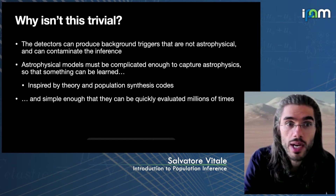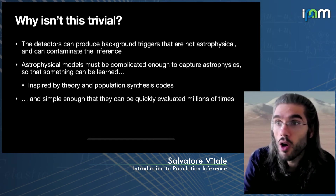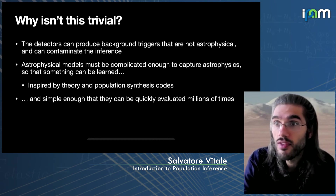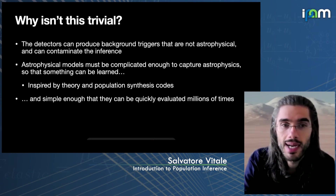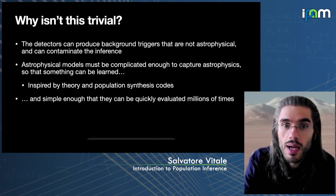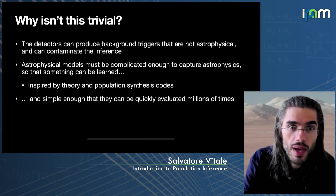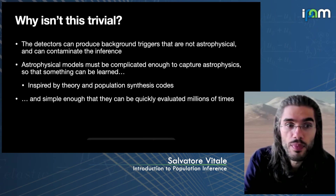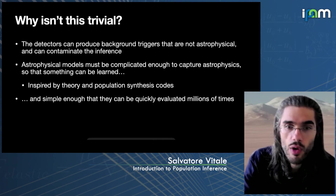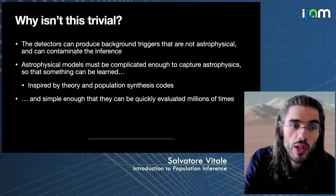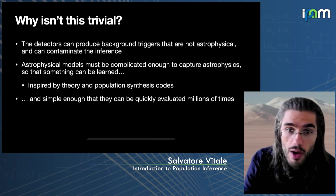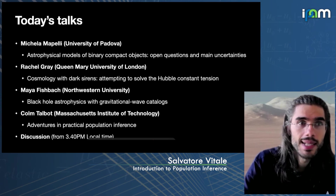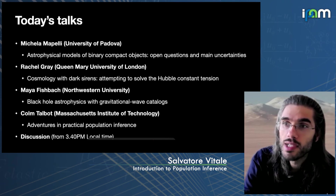Our detectors are also good at producing triggers which are not astrophysical in origin — what we call glitches — and those can contaminate the inference if not properly accounted for. Last but not least, the astrophysical models, which are one of the main required ingredients, must be complicated and complex enough to capture the astrophysics so that we can actually learn something useful. Typically these models are inspired by theory and/or population synthesis codes. At the same time, the models must still be simple enough that we can calculate them quickly, because we need to evaluate them millions of times.